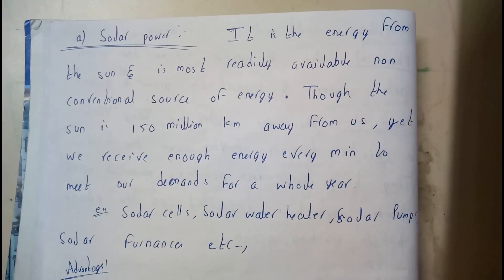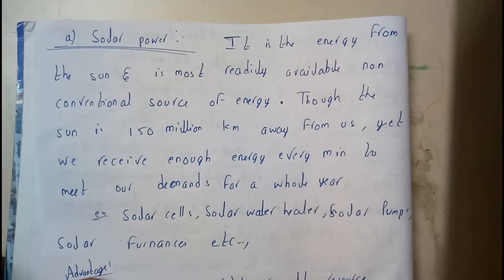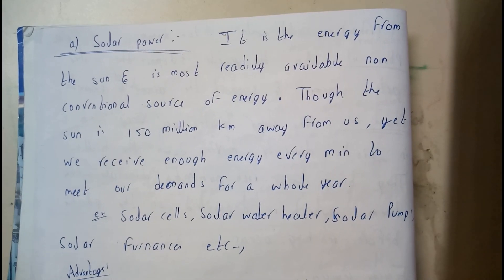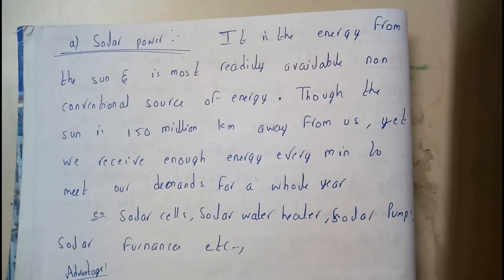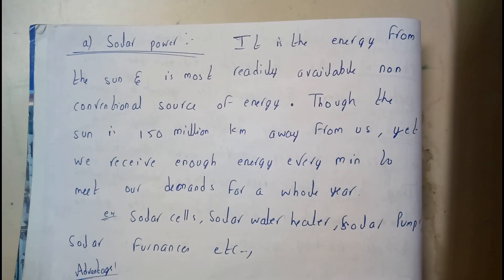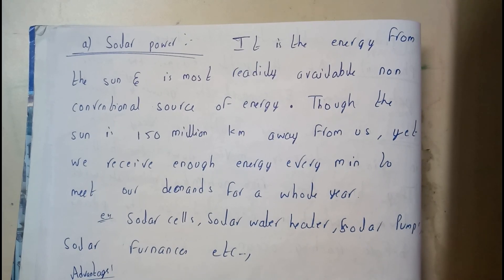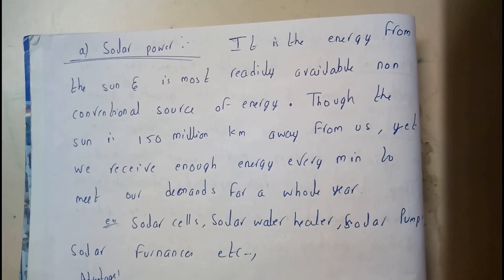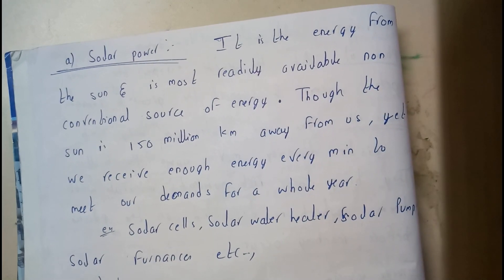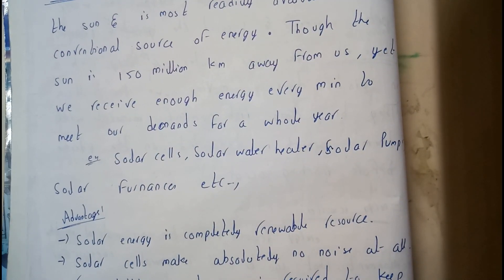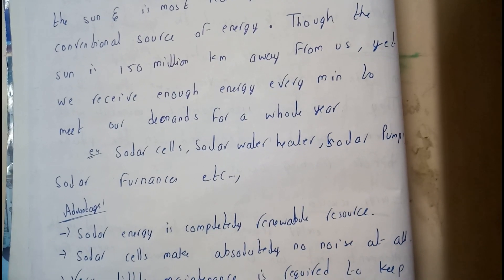Starting with solar energy — it is the energy from the sun and is the most readily available non-conventional source of energy. The sunlight is never going to decrease; the temperature may increase but it will never decrease. The sun is 150 million kilometers away from us, yet we receive enough energy every minute to meet our needs for the whole year.